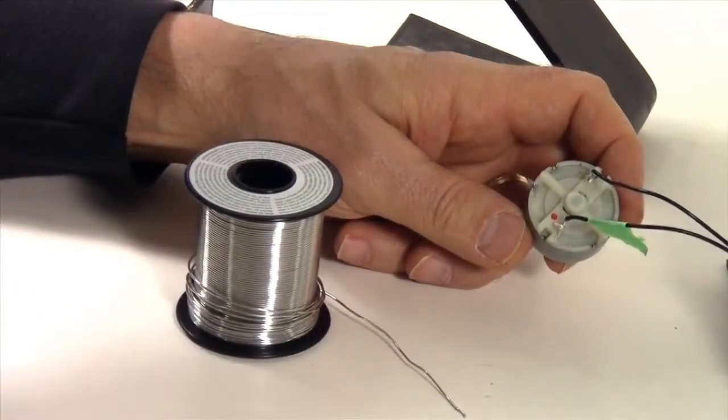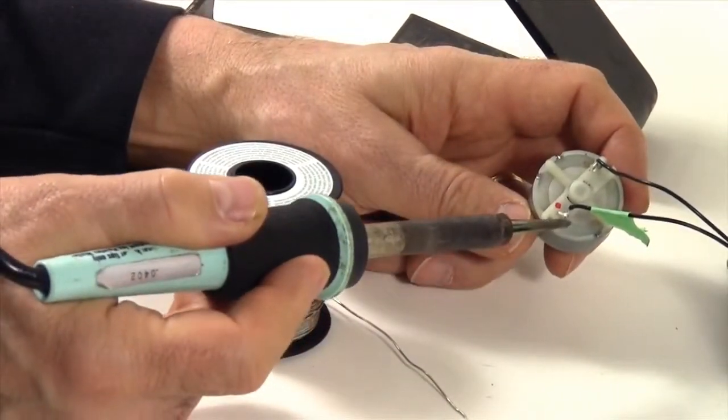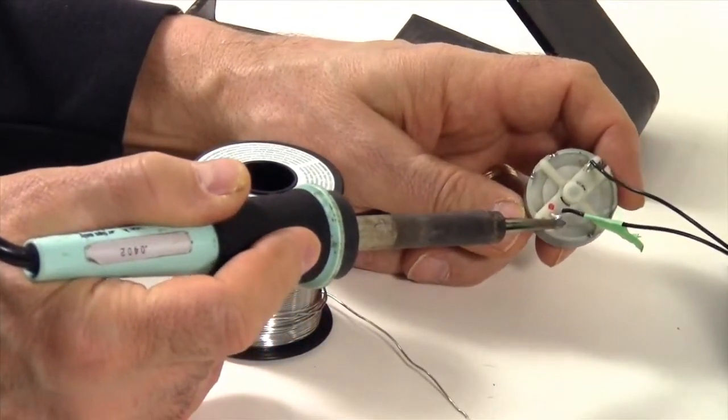Now we're going to use our soldering iron to remove or unsolder the wires.